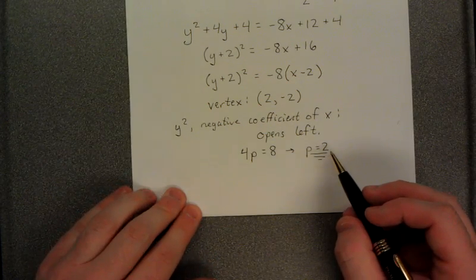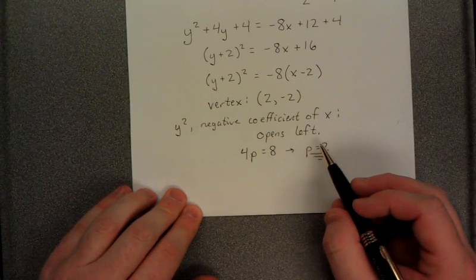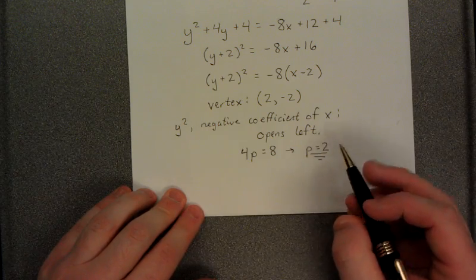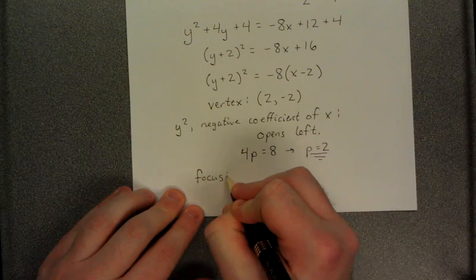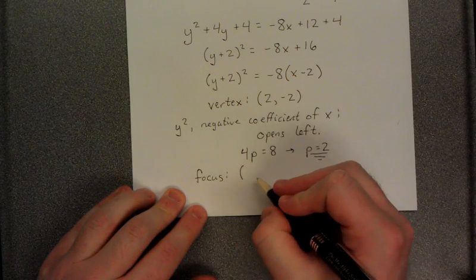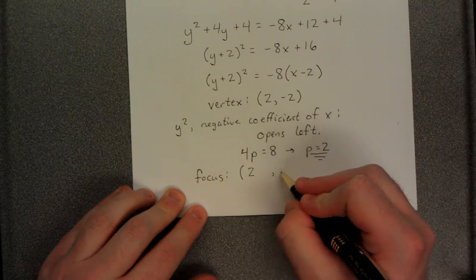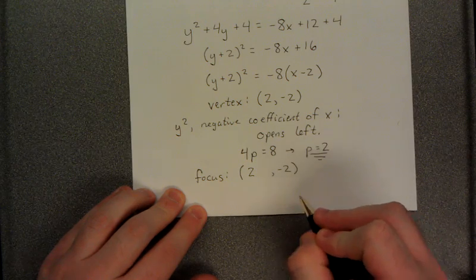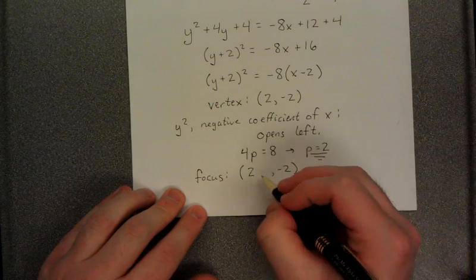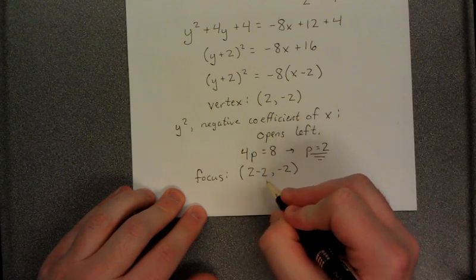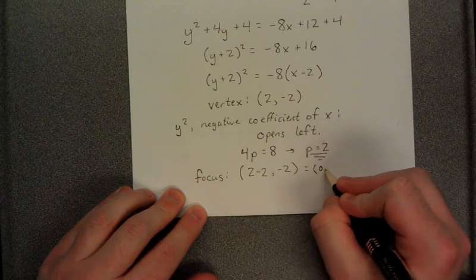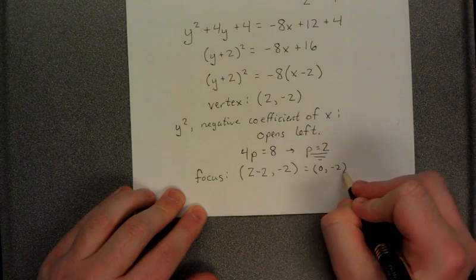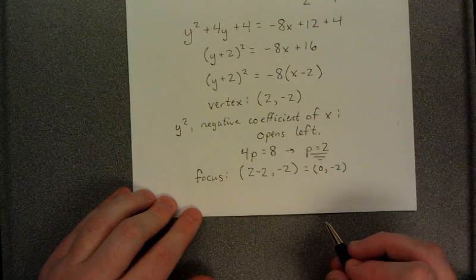Now with this in mind, and the fact that it opens to the left, the focus will be located to the left of the vertex. So we're going to start at our vertex, which is 2, negative 2, and in order to move 2 units to the left, we'll subtract 2 from the x-coordinate. That indicates a movement to the left. This tells us that our focus is located at the point 0, negative 2.